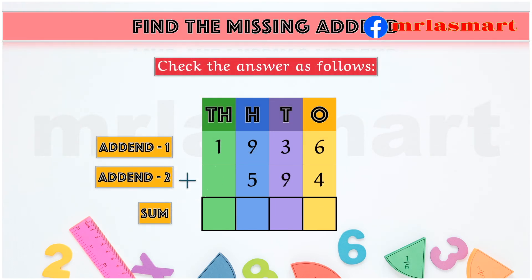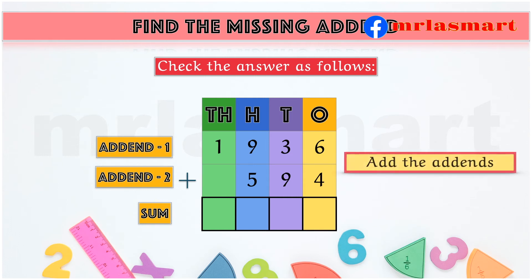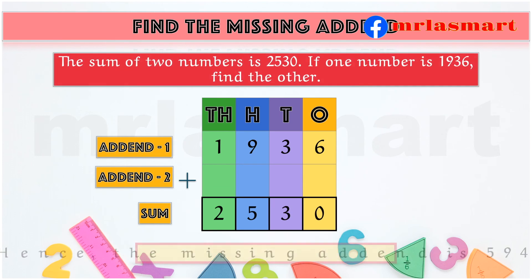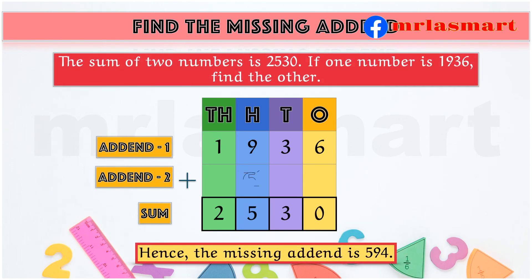Check the answer as follows: add the addends. We arrive at the given sum 2530. Hence, the missing addend is 594.